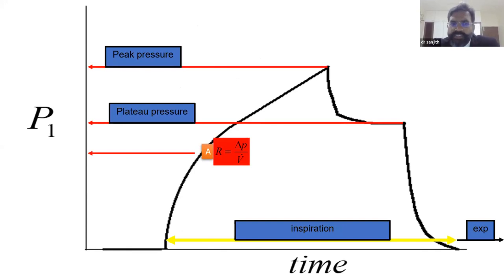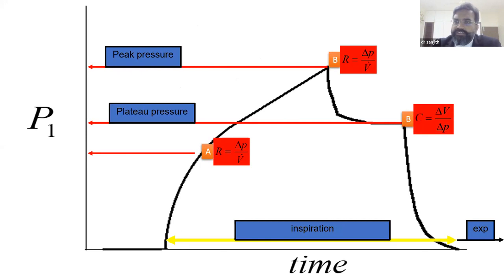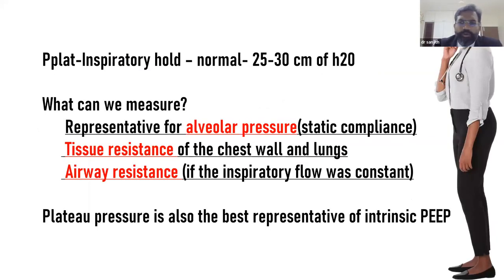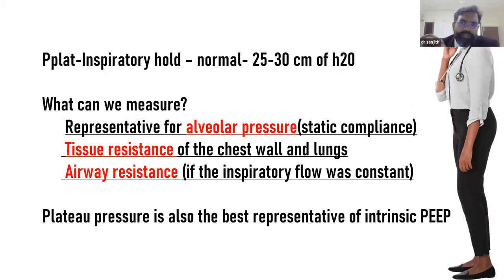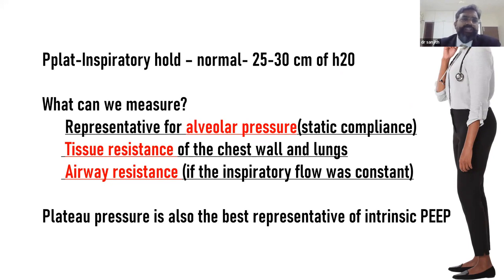Dissecting the waveform: the top of the inspiratory curve is peak pressure; the plateau after the pause is plateau pressure. The slope is due to resistance (ΔP/flow); the plateau reflects compliance (ΔV/ΔP). To measure plateau pressure, press the inspiratory hold for approximately two seconds. Normal plateau pressure is less than 30 cmH₂O; above 30 is considered injurious ventilation.